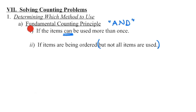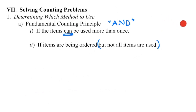Problems involving the fundamental counting principle use the word AND. Imagine your different stages, such as the buffet, where we have a table of fruit, a table of pastries, a table of beverages. This is how many choices we have at the first stage, this is how many choices at the second stage, and this is how many choices at the third stage, etc.